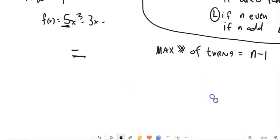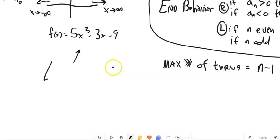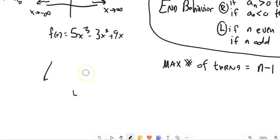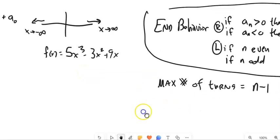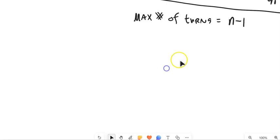So if I go back and look at this one, that 5 is positive — I know it's going to go up to the right because it's positive. This is odd, so I know it's going to go down to the left. The max number of turns this will have is two — it could have two turns, it might have none, but it's not going to have any more than two. One less than the degree. When we're talking about polynomials, the degree is in the leading term — it's the biggest power we have — and the max number of turns is one less than that.